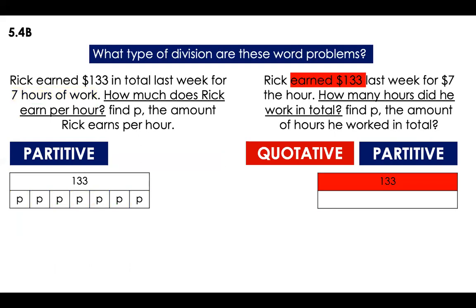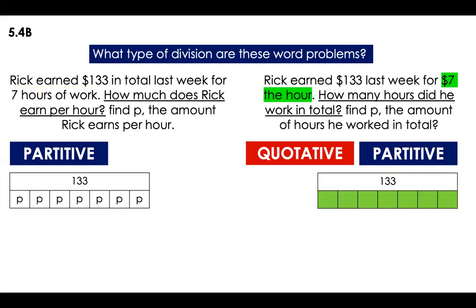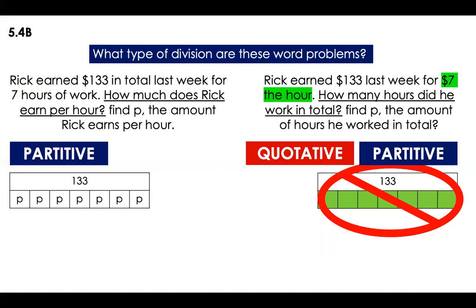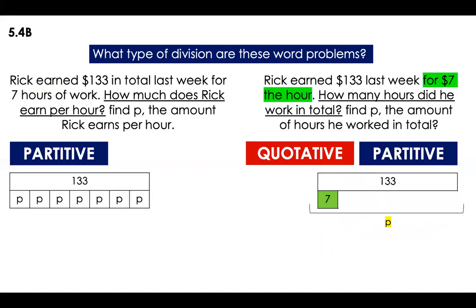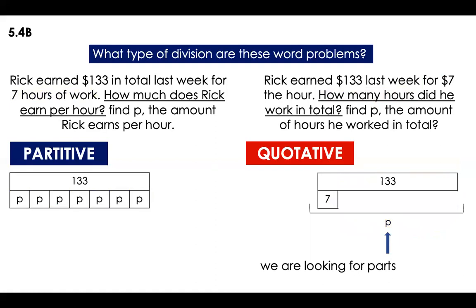Now the second problem. We have the total of $133 and we know the quantity in each part is $7. Do we represent it the same as the previous one — do we have seven parts? No, we don't have seven parts. We only know that one part equals $7, so P equals the number of hours. The representation is different here: I have the total and I know the quantity in each part, so I'm looking for the number of parts. That means this is a quotative division.